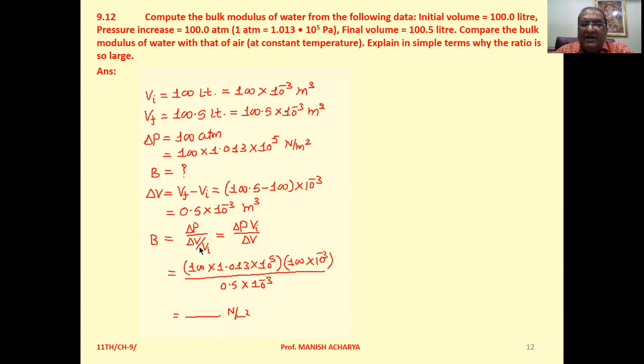Now bulk modulus is delta P upon delta V by V_i. So delta P times V_i upon delta V.